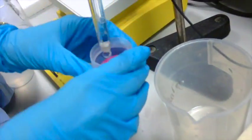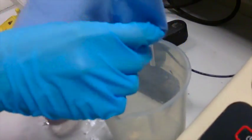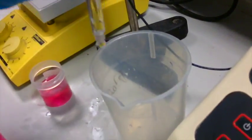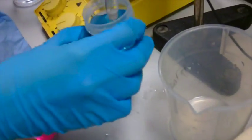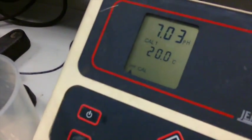After this, the probe is then washed briefly with water again to remove any excess fluid and dried briefly with tissue. It is then inserted into the pH 7 solution, where it is then calibrated for pH 7.